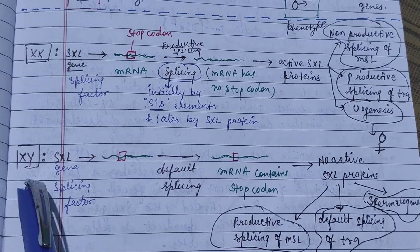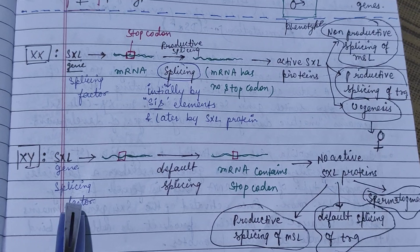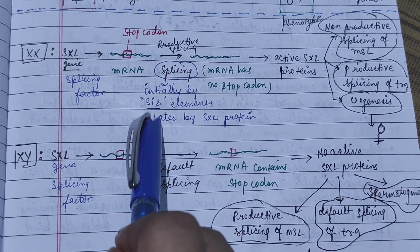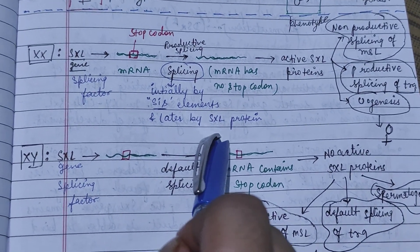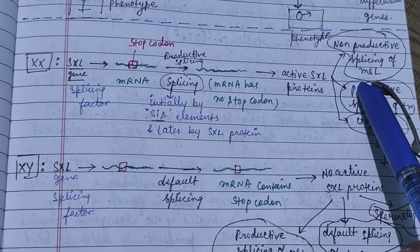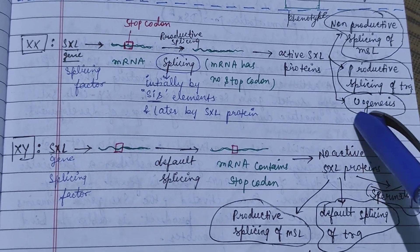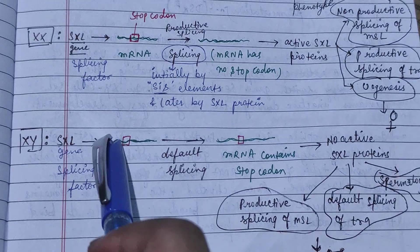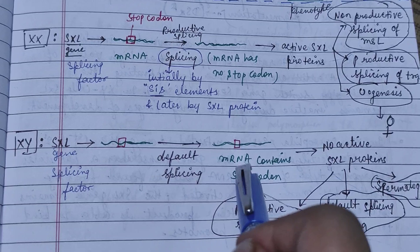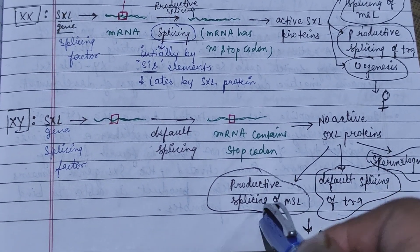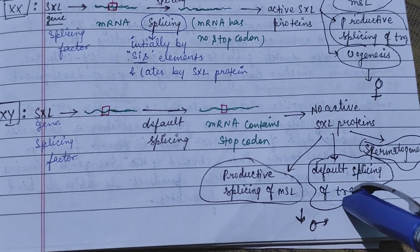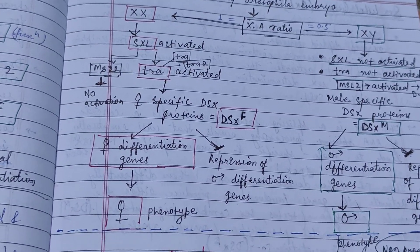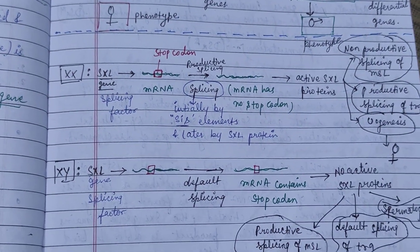These genes act as splicing factors which process the mRNA. The mRNA initially has a stop codon; splicing is initiated by six specific elements and later by the Sxl protein. Active Sxl protein leads to non-productive splicing of the MSL gene, productive splicing of the tra gene, and oogenesis leading to the female phenotypic character. In males, by default splicing the mRNA contains a stop codon, no active Sxl gene, productive splicing of the MSL gene, default splicing of the tra gene, and spermatogenesis leading to the male phenotypic character. This is all about dosage compensation and sex determination in Drosophila — thank you and keep watching.